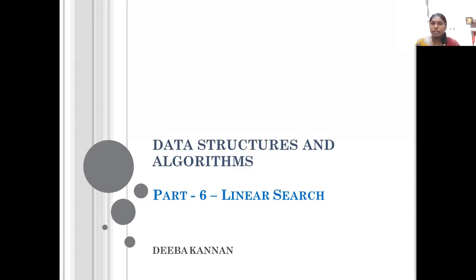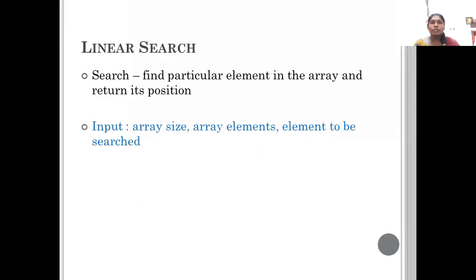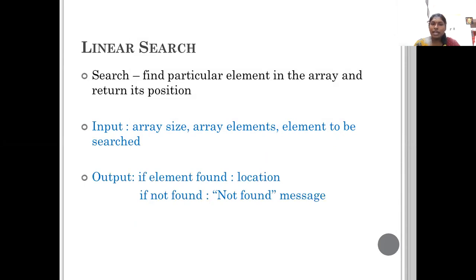Searching is to check whether the particular node is present in the data structure or not. That is called searching, and linear search, as the name denotes, searches one by one. We are going to take the input as an array size, elements in the array, and the element that you want to search. The output is: if the element is found, we return the location; if not found, we return a not found message.